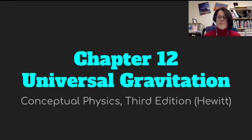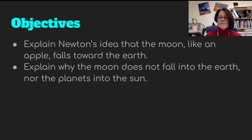Hello everybody, it's Mrs. Pound and we're going into Chapter 12 about Universal Gravitation. Our objectives with this section are to explain Newton's ideas that the moon, like an apple, falls toward the earth, and explain why the moon does not fall into the earth, nor the planets into the sun.